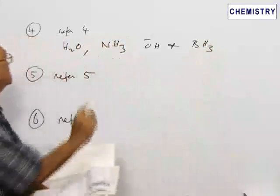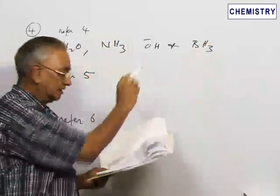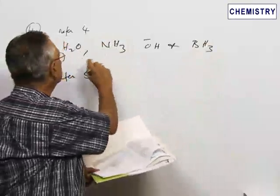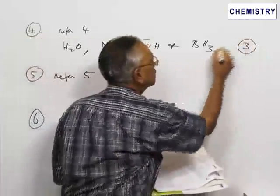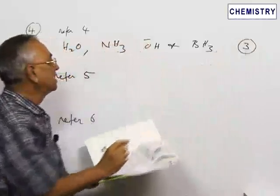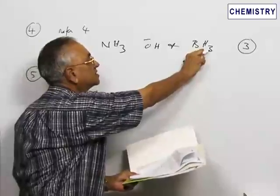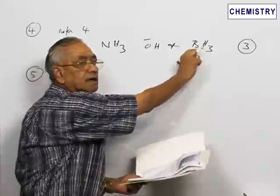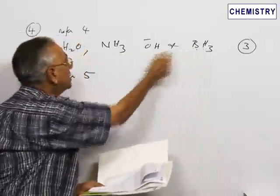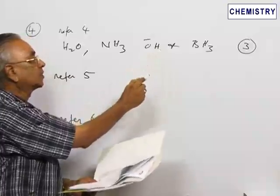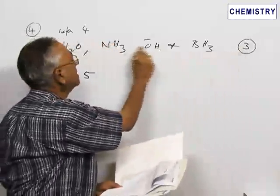The question asks which among these four are nucleophiles. The correct option is option 3, which includes A, B, and C. BH₃ is not a nucleophile — it is an electron-deficient compound and therefore cannot be a nucleophile. Excepting D, the remaining three are nucleophiles, so the correct choice is option 3: A, B, and C.